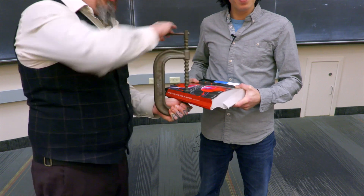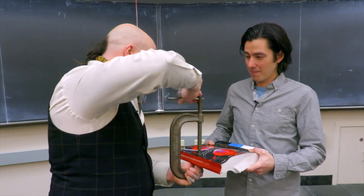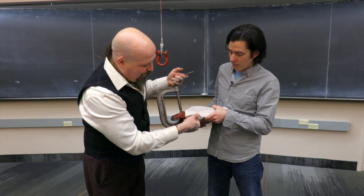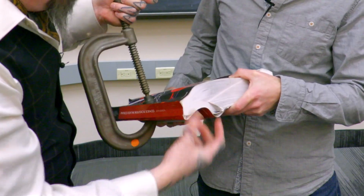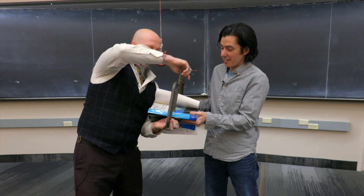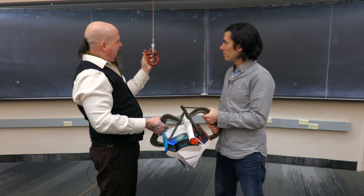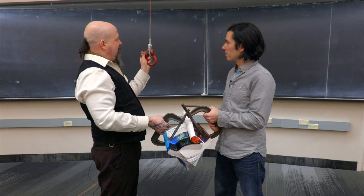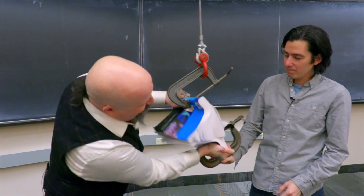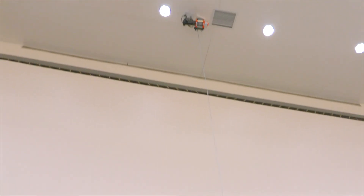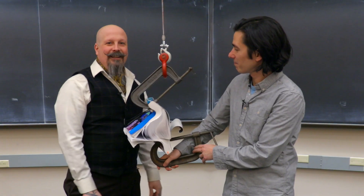We're going to put these clamps on here to make sure it's held tight. Now there's something important to notice: these clamps aren't actually gripping the pages — there's a substantial space between them. It's simply gripping the spine of the textbook. We're going to attach it to this winch here and see if it's actually strong enough to lift Dr. Massa into the air.